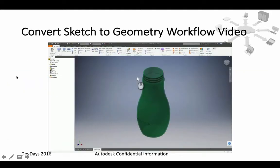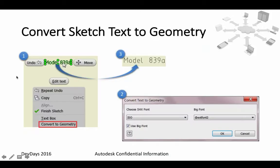There's also a 'Convert Sketch to Geometry' workflow. You simply select the sketch text you want to convert into geometry, say 'convert to geometry,' specify the font type you want to use for the conversion, click OK, and it's translated into geometry that you can use later on in your design.